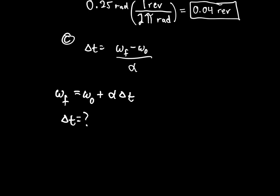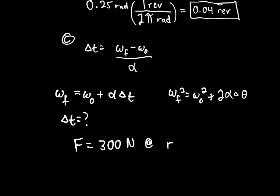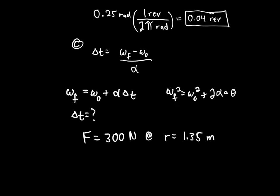They gave us more information in Part C: a force and a radius. That force applied at a radius gives us a torque. So torque equals force times lever arm — which is 300 newtons times 1.35 meters.